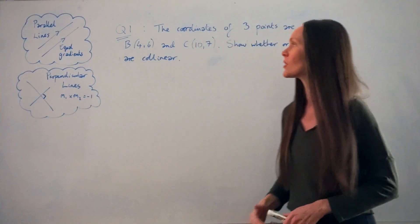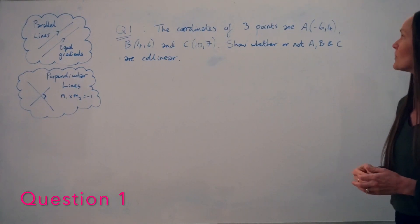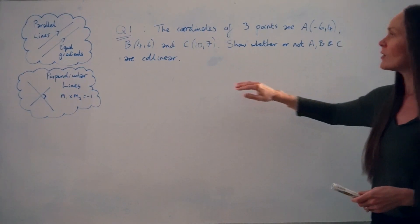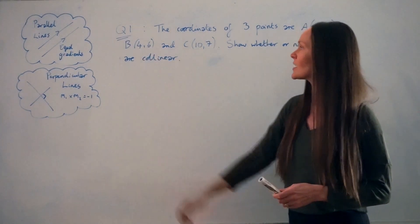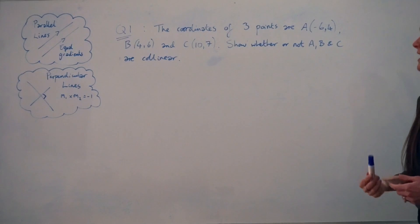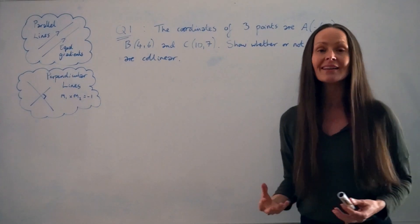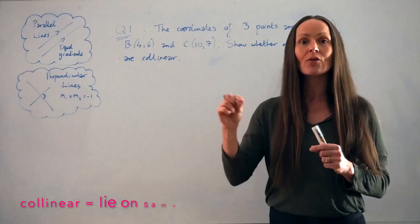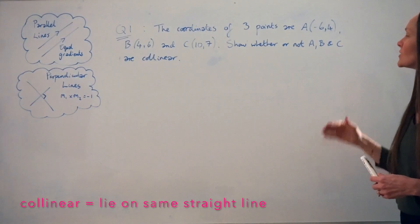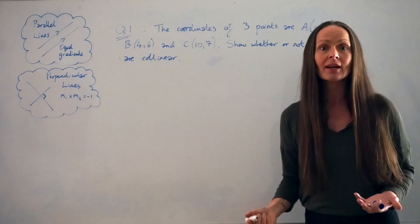So in the first question, it says that the coordinates of three points are A, which is at (−6, 4), B at (4, 6), and C at (10, 7). Show whether or not A, B, and C are collinear. Collinear just means the points lie on the same straight line, so we have to show whether or not A, B, and C lie on the same straight line.